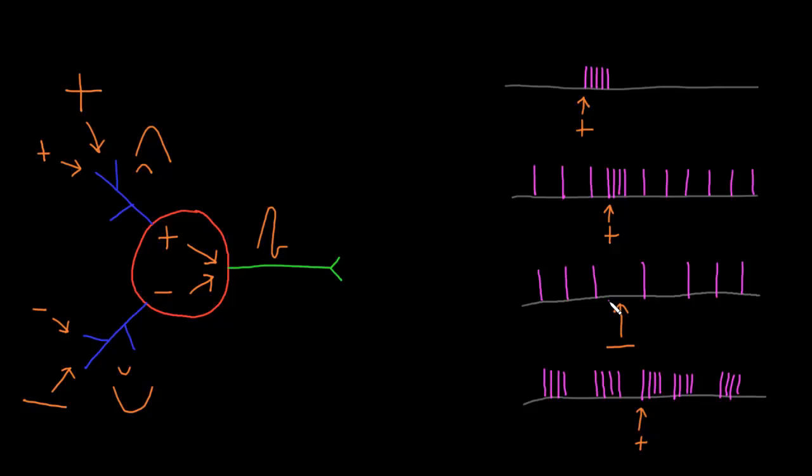The different temporal patterns of action potentials are then converted to the amounts and temporal patterns of neurotransmitter release at the synapse, and target cells can be set up in many different ways to respond to these temporal patterns and amounts of neurotransmitter release.